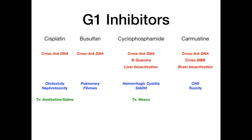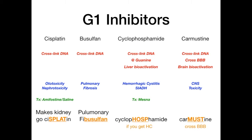Mnemonics for G1 agents: Cisplatin — 'splat' is in the name; cisplatin makes the kidney go splat, causing nephrotoxicity, treated with amifostine and saline. Busulfan causes pulmonary fibrosis — think 'pulmonary fibusulfan' because fibrosis sounds like fibusulfan. This is one of two anti-cancer drugs causing pulmonary fibrosis, and conveniently the other one also begins with B.